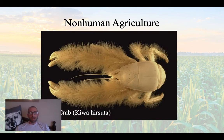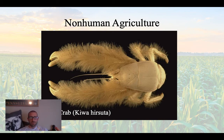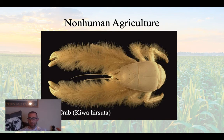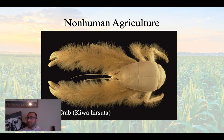We also have the Yeti crab with those big furry claws. The Yeti crab lives on the sea floor and it actually farms for bacteria with its claws. It has its claws out near thermal vents that catch bacteria. The bacteria grow in the claws and the crab feeds off that bacteria as its primary food source — it's actually growing food on its own body. Another type of agriculture.